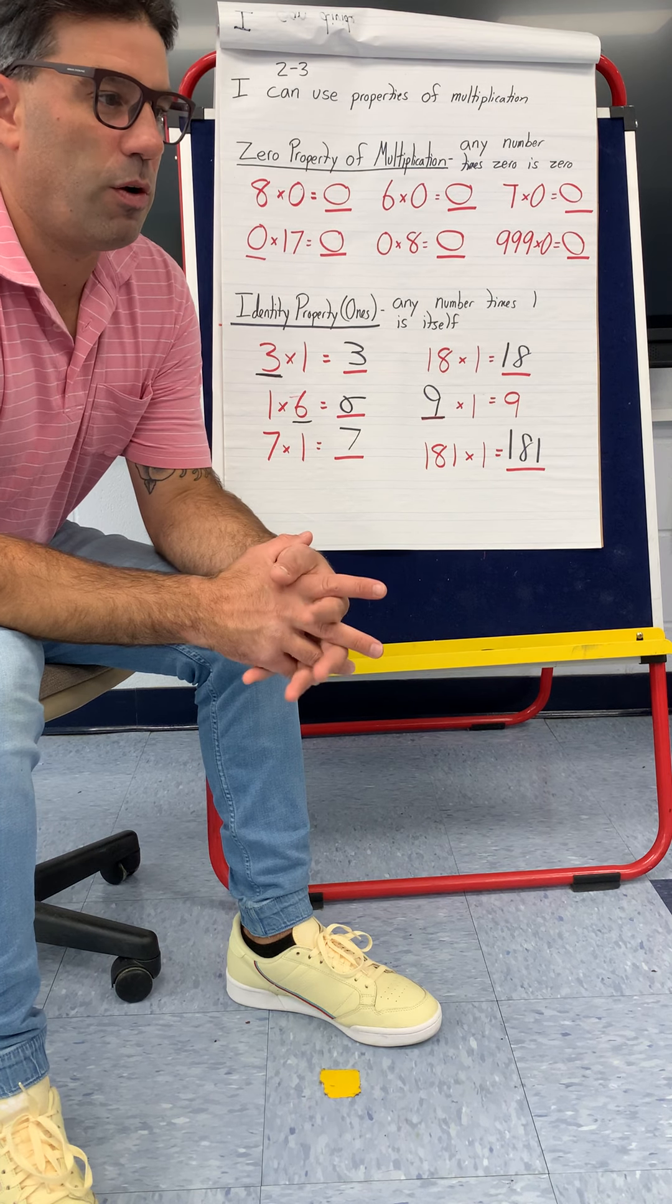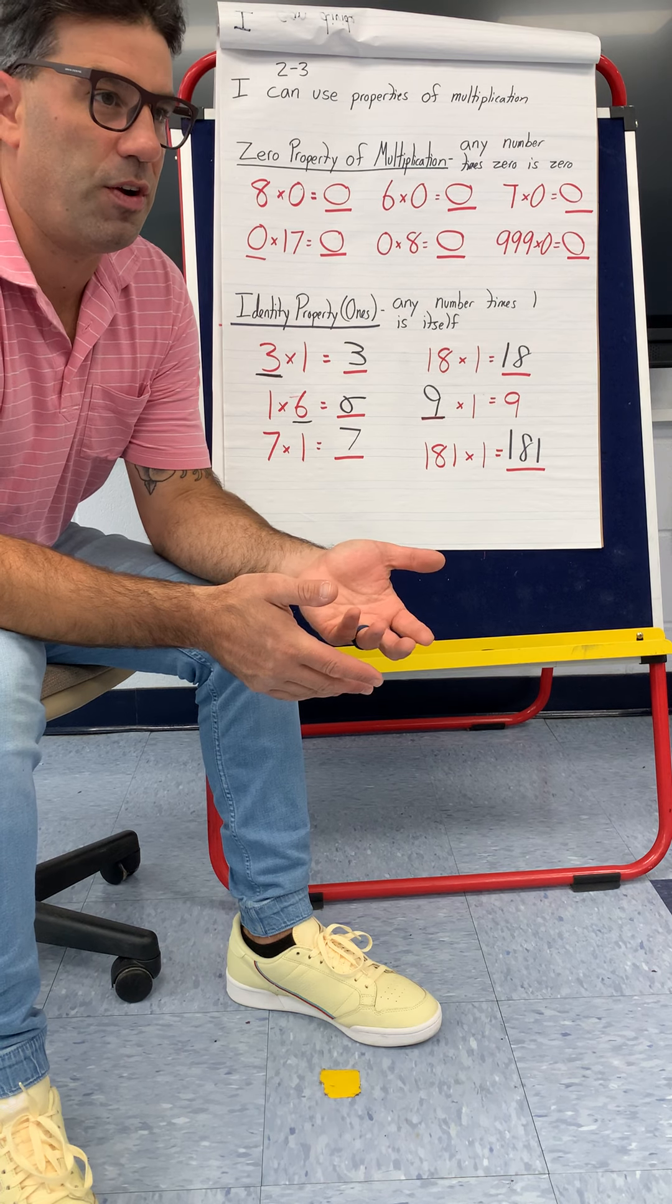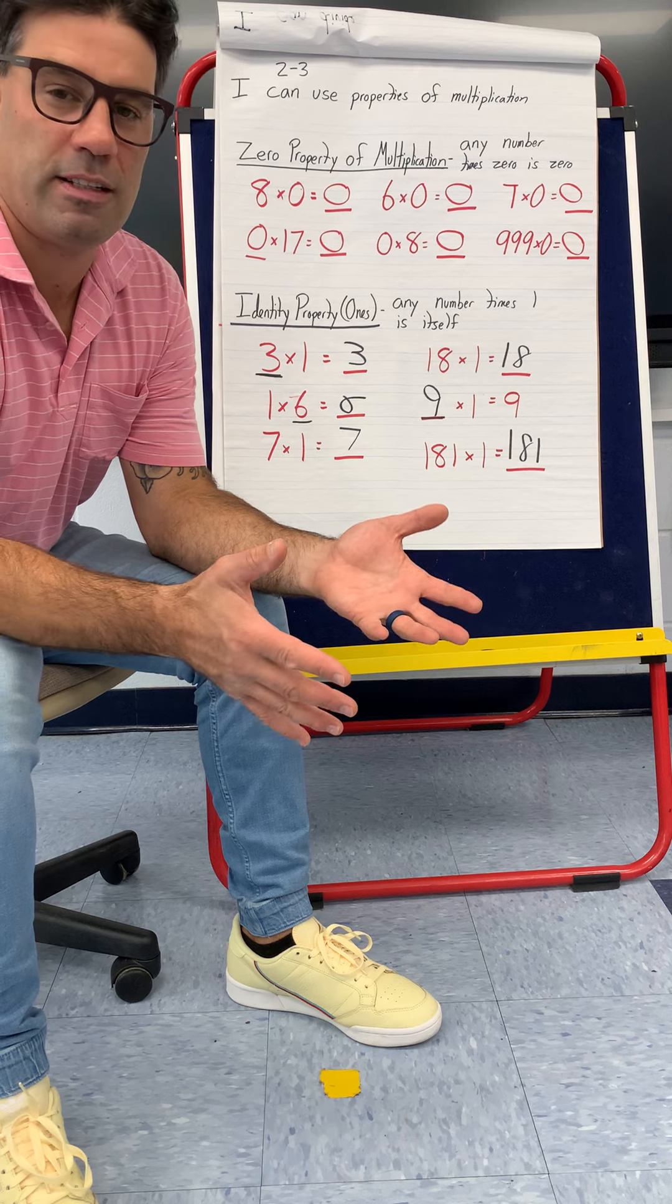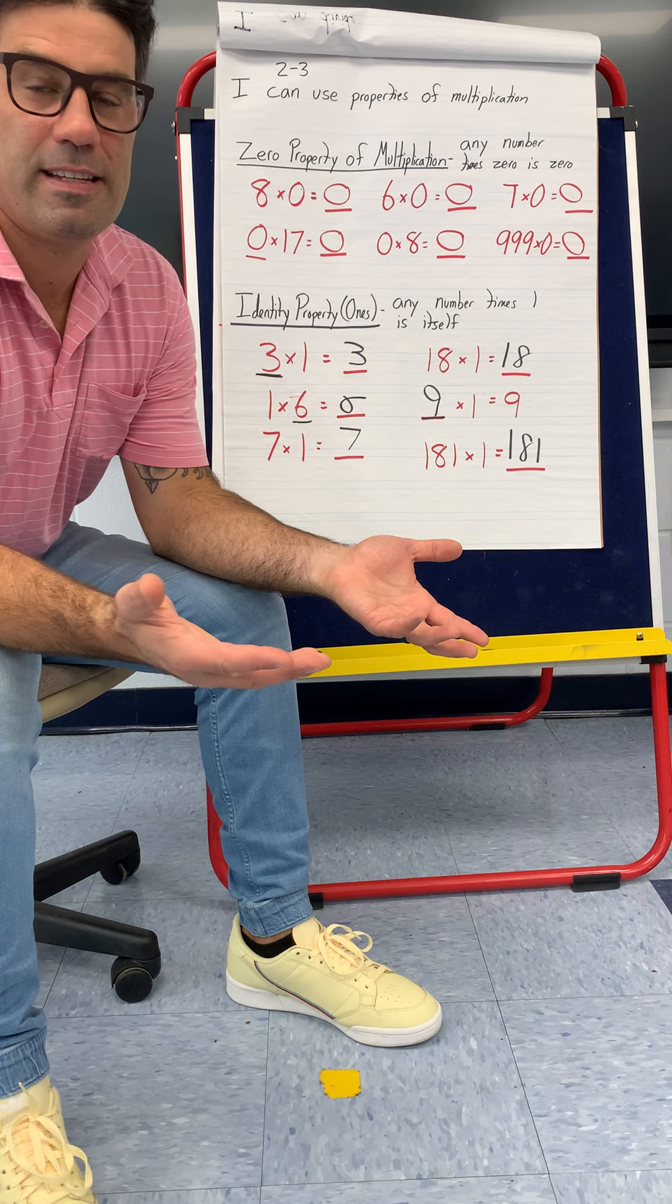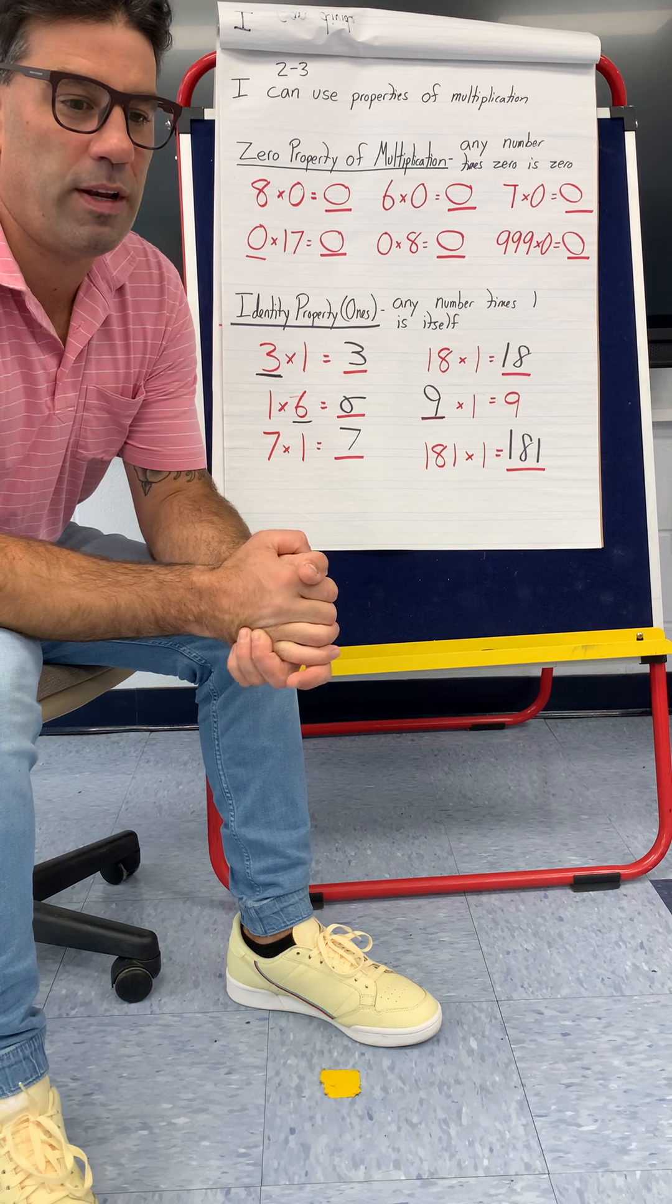So basically anything times zero is zero. Anything times one is itself. And if they beat each other, like one times, anything times one is itself. So zero times one, it'll always be zero or the other number.